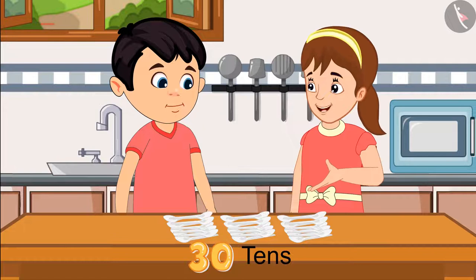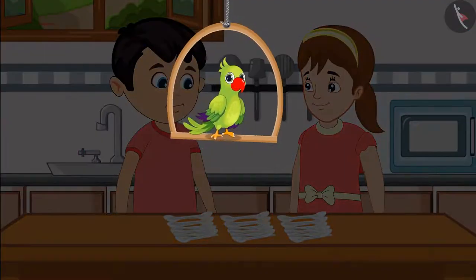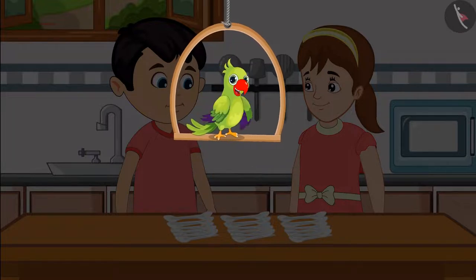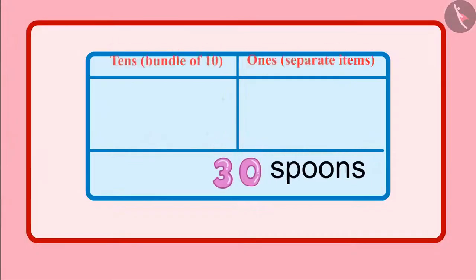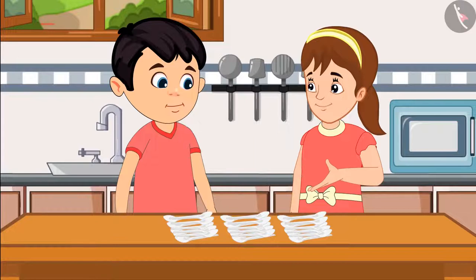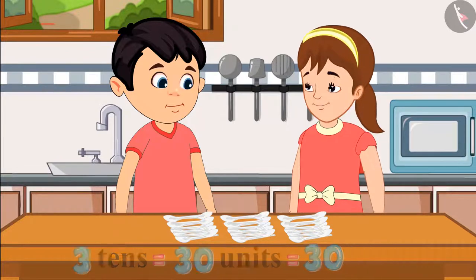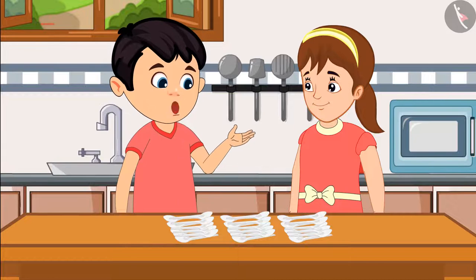Aarti corrects him: a group of 10 means one 10, not ten tens. She explains to the children that Chotu has bought just 30 spoons — 30 does not mean 30 tens, but 30 units. Thirty tens would be way too many spoons! Chotu says: okay, now I have understood — you are right, Aarti. Let's take the spoons for the guests.